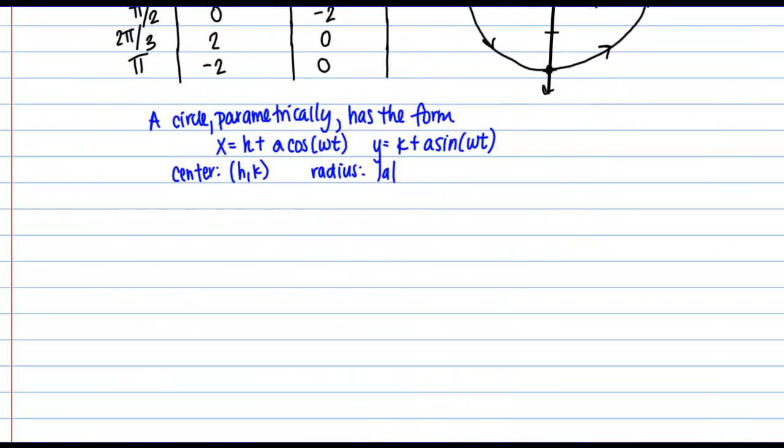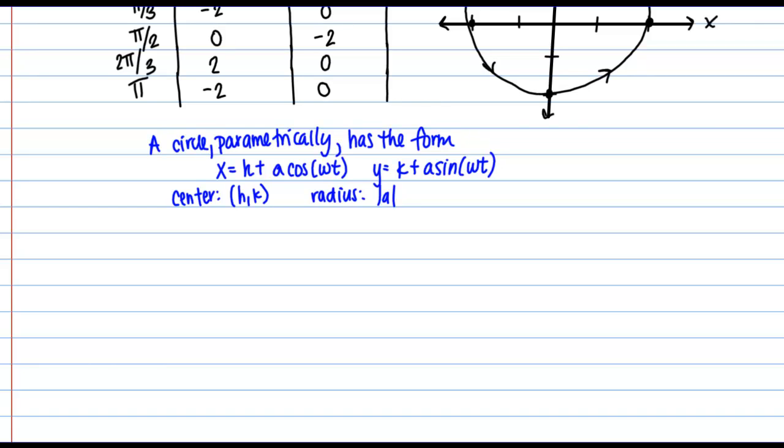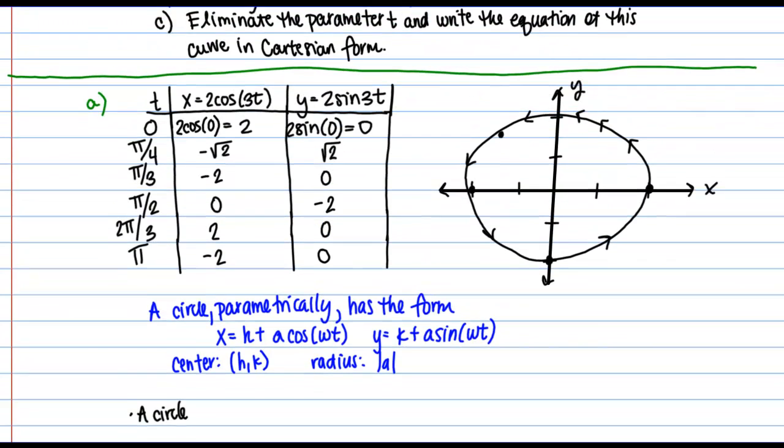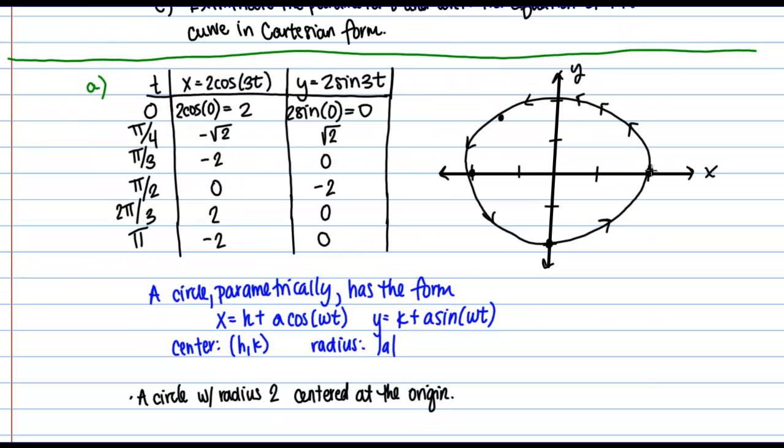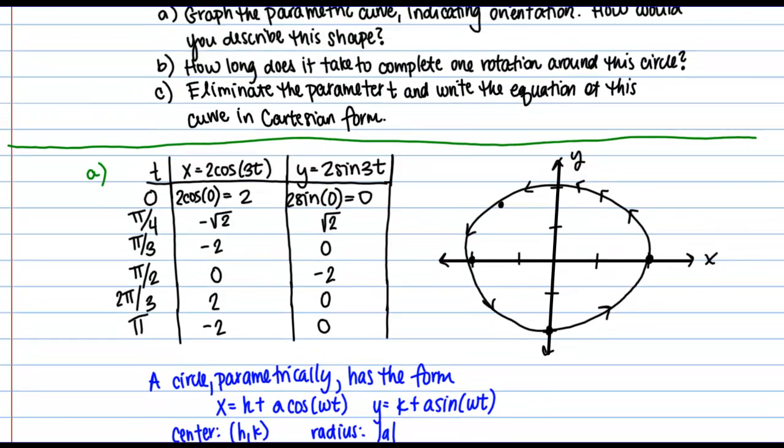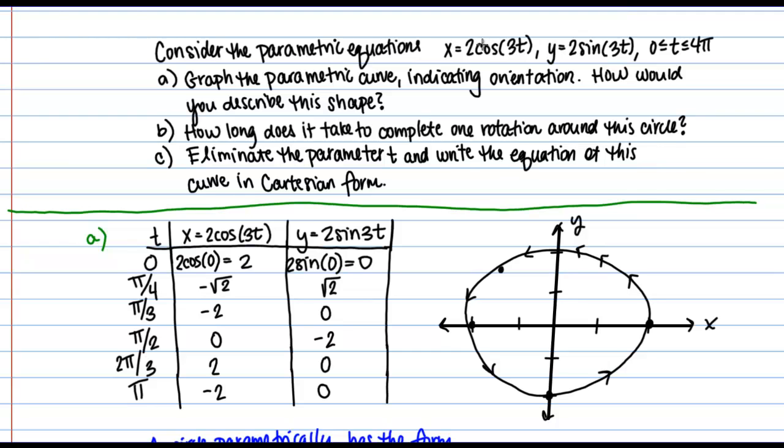So let's just take a second to describe the shape we see here. So what we see is a circle with radius of 2 and a center at the origin. And we know that both from the graph that we drew by plotting points, but also we could have known that just by the original equation. I see this coefficient of 2 in front of the cosine and the sine. That tells me my radius is 2.